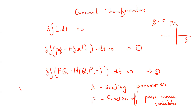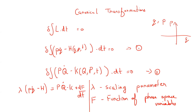We can write: lambda times (PQ̇ minus H) equals capital P, capital Q̇ minus K plus dF/dt. Let me call the new Hamiltonian K so we can differentiate it. Setting the scaling parameter to 1, we have PQ̇ minus K plus dF/dt. By this equation we can solve for the new equations of motion in the new coordinate system.